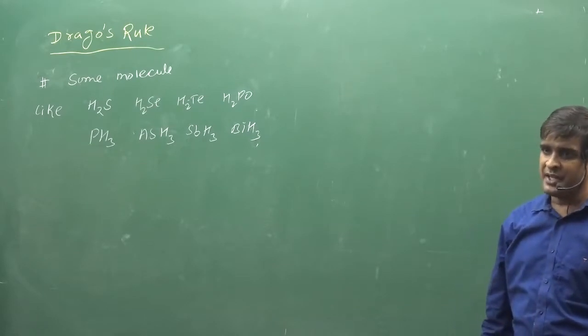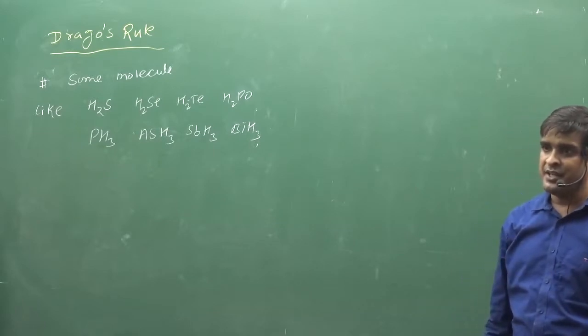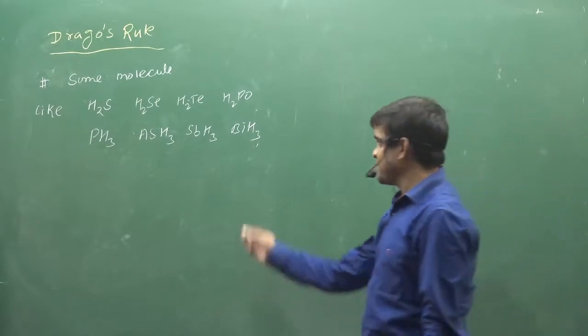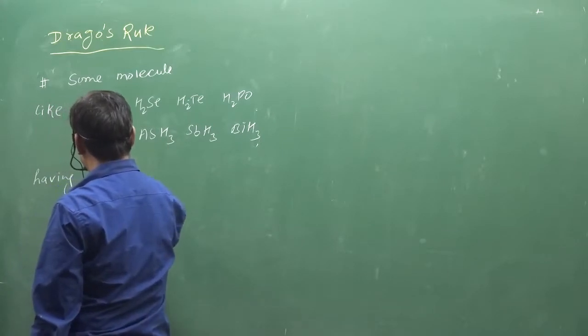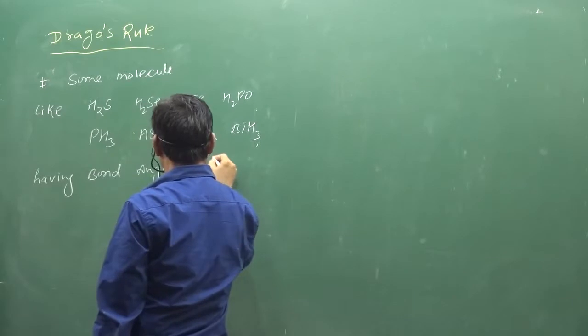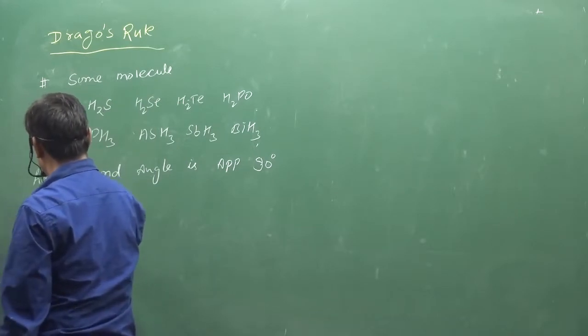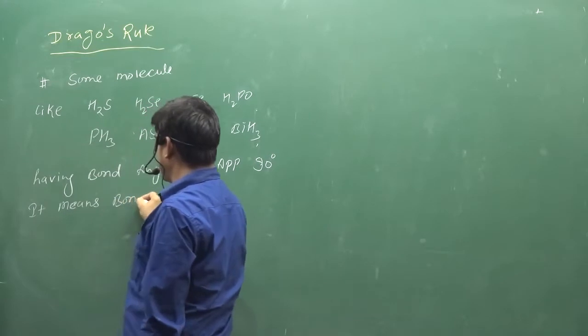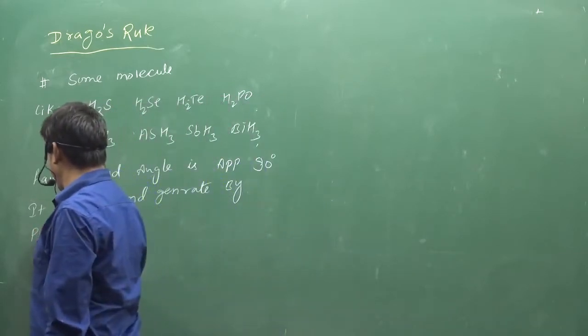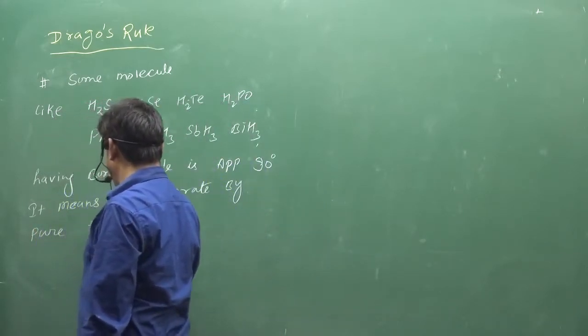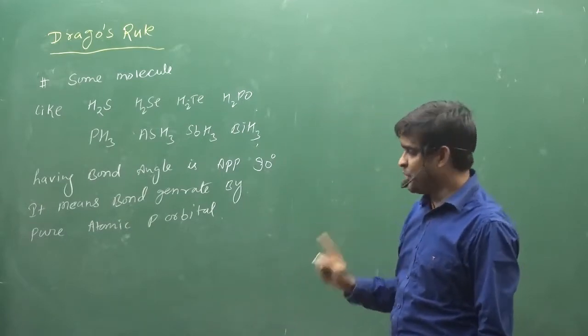So if the bond angle is 90 degrees, we will be able to participate pure atomic orbital and then what will be the hybridization of them? Some molecules like this having bond angle is approximately 90 degrees. It means bond generated by pure atomic p orbital. Pure atomic p orbital, i.e. p orbital is made.